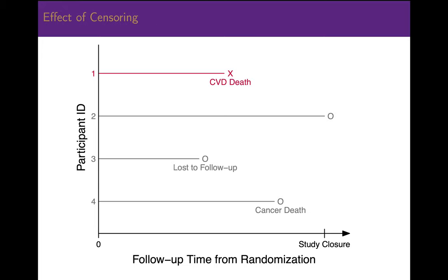Censoring can lead to biased estimation of the survival time in a study population. There are at least two incorrect ways to deal with censored observations. The first: if we simply delete all censored observations, then we are discarding valid information about how effective the treatment was. Participant 2, for example, was successfully treated and lived until the end of the study; deleting participant 2 from the study would make the estimated survival time too short. On the other hand, if we ignore the censoring completely and assume that all participants had the event of interest at the last known time, then we are also ignoring valid information about how effective the treatment was.